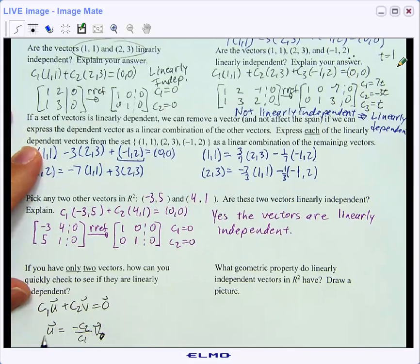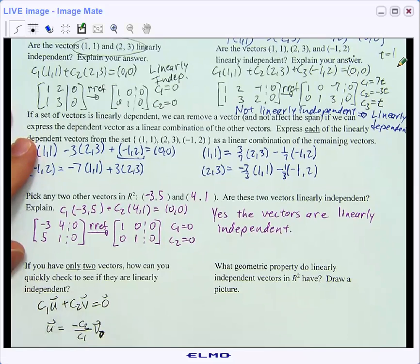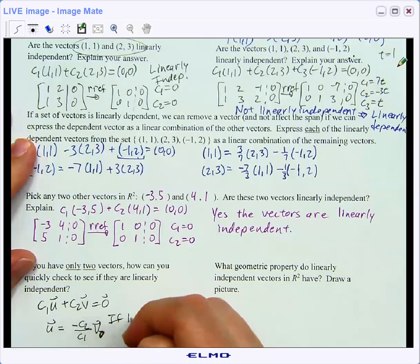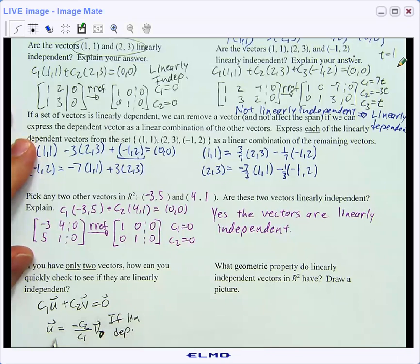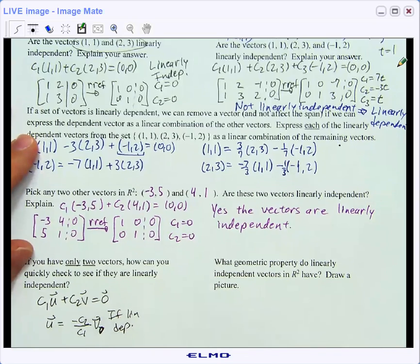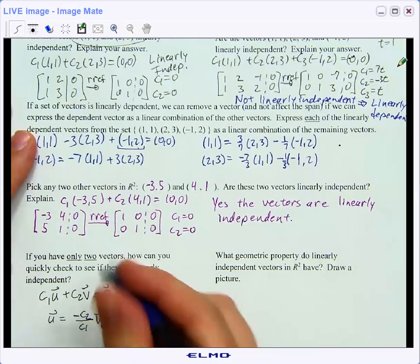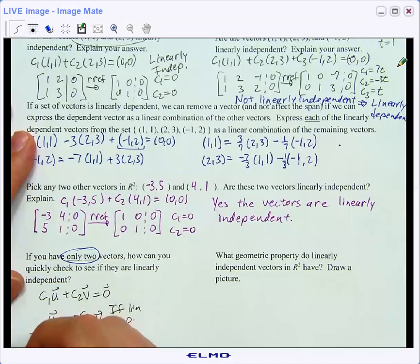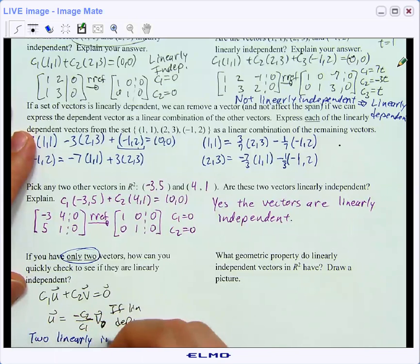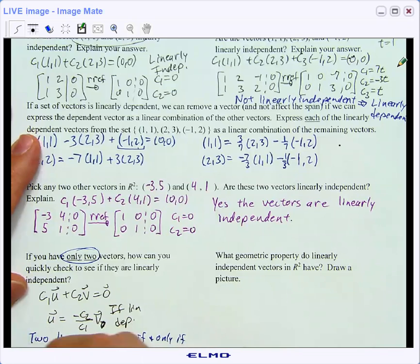And so we would see that if two vectors are linearly dependent, then one vector would be a scalar multiple of the other vector. And in fact, we can use that in any case, not just in R². So if we have only two vectors, the two vectors will be linearly independent if and only if they are not scalar multiples, or in other words, if one is not a scalar multiple of the other.